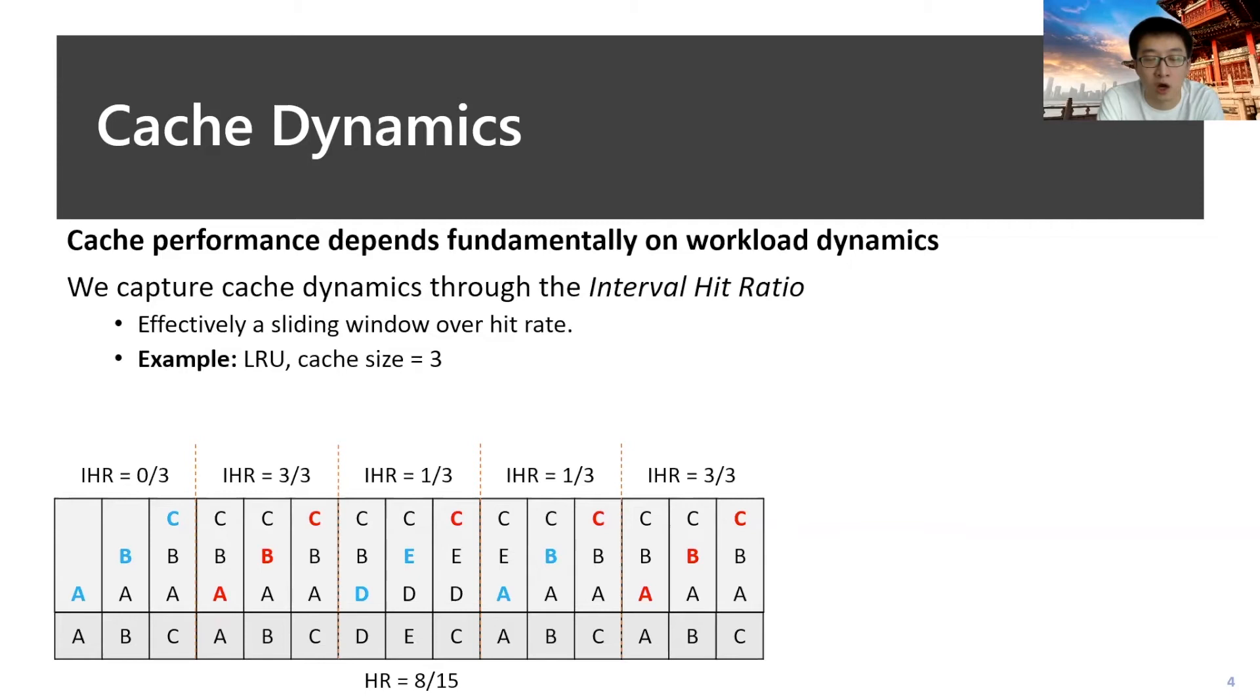But later, when all the requests are on already known objects, the interval hit ratio is very high. It could get lower along the trace when some new objects come and finally still get high when again the performance is as expected.